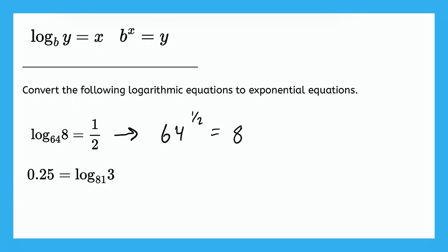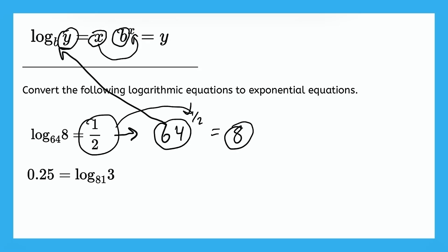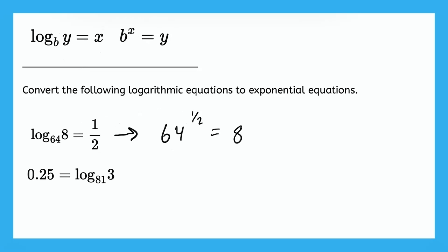So there it is. That 64, which corresponded to b, became the base in our exponential expression on the left. And on the right, we got 8, which was originally the last part of the logarithmic expression, which corresponds to y. And lastly, we can see that this x, which was originally on the right side of the logarithmic equation, went into the exponent in our exponential equation. So this ½ moved into the exponent on 64. So now we have a new equation that is still true. So we can say that 64 to the power of ½ is equal to 8, which is like saying that the square root of 64 is 8, which we know is true.